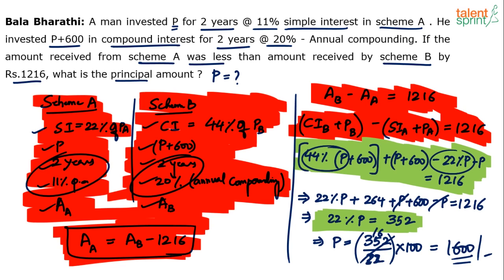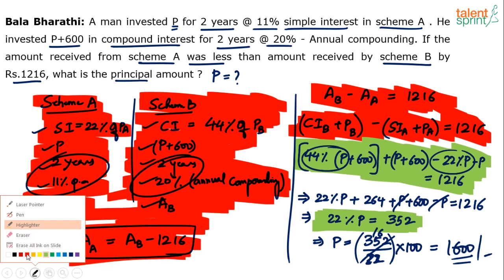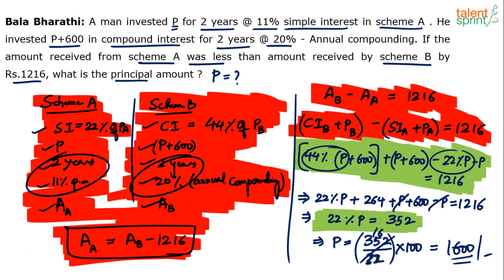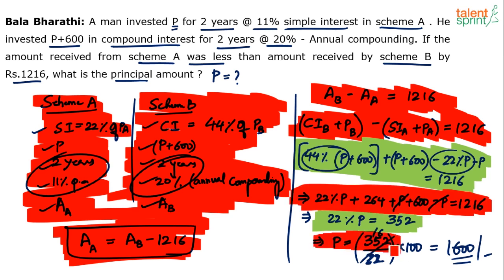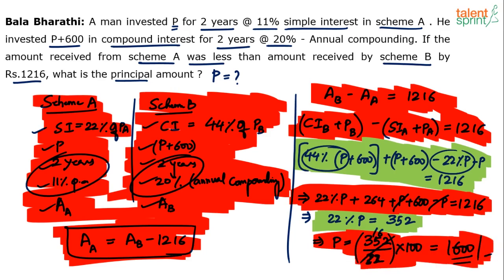If you cannot do that mental calculation, you are out of the race. This detailed explanation is given for learning purposes — you will not get extra marks for writing all the steps. Only what is essential is needed. The final answer is 1600, which is the principal amount.